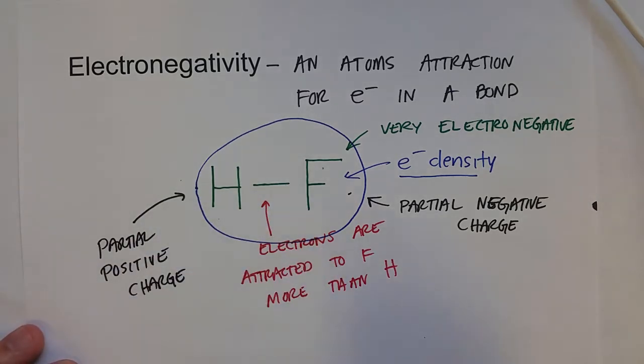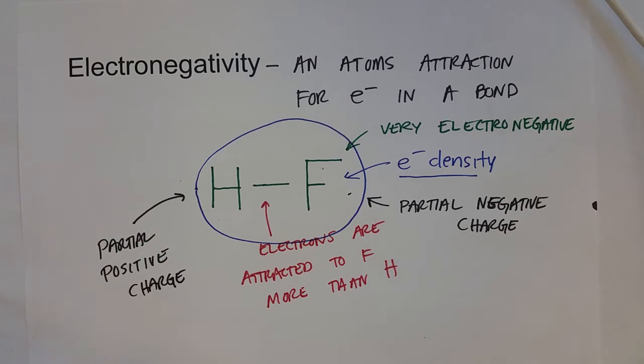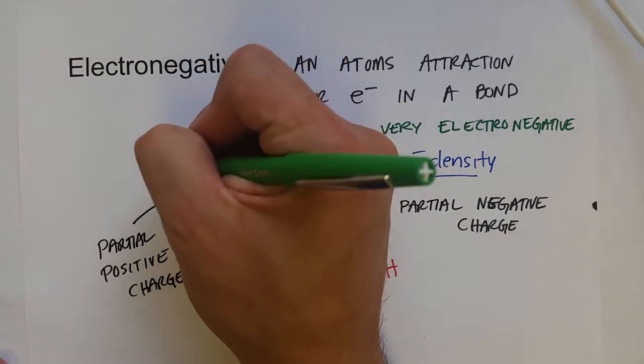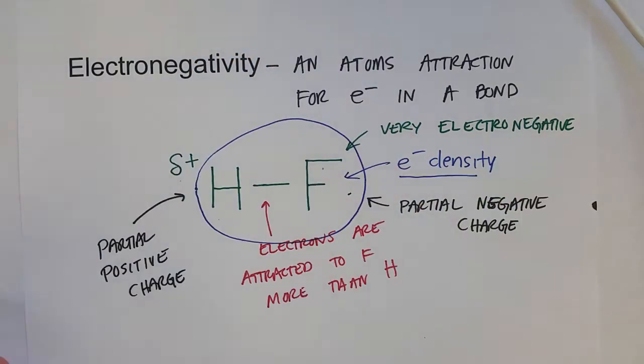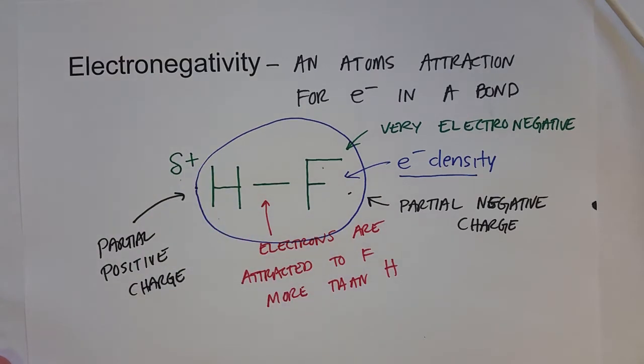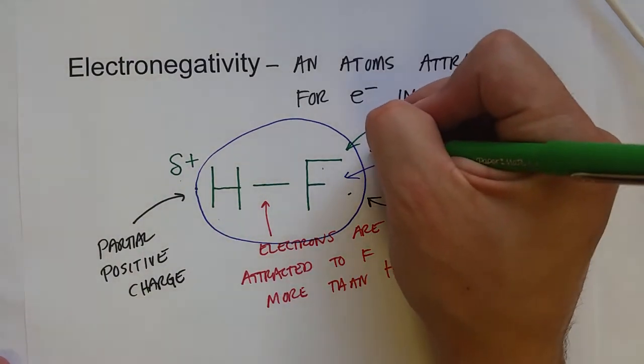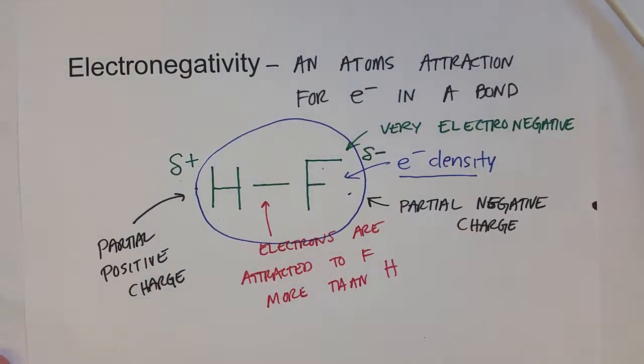And so we can display that by using the lowercase Greek letter delta. So we have a partial positive charge by the hydrogen atom, and a partial negative charge by the fluorine.